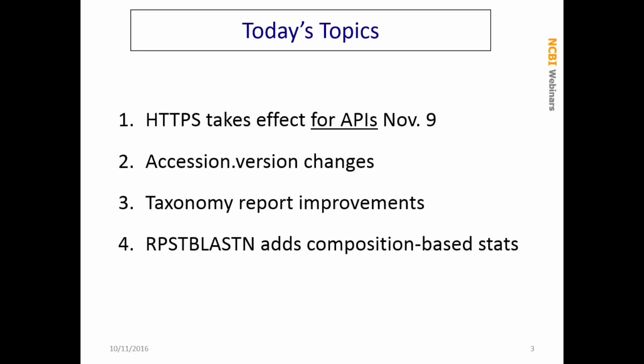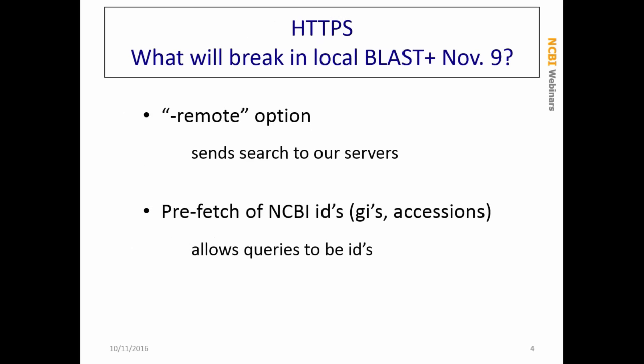There's an NCBI-wide switch to HTTPS from standard HTTP, which will particularly affect standalone BLAST. This change is going to take effect for APIs on November 9th — the general NCBI web pages have already made this change. What's going to break on November 9th if you are still using version 2.4.0 or earlier: primarily the remote option. If you send searches to our servers using the remote option, that will fail to work unless you have upgraded to 2.5.0 by November 9th.